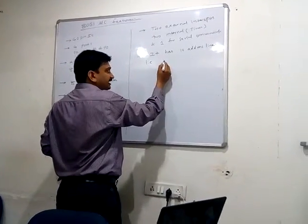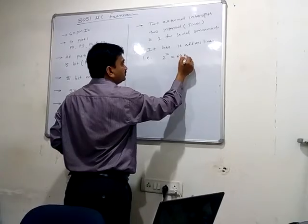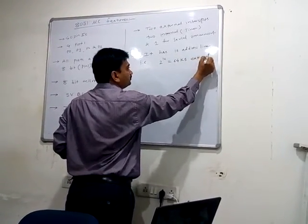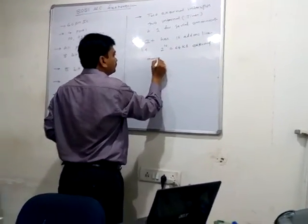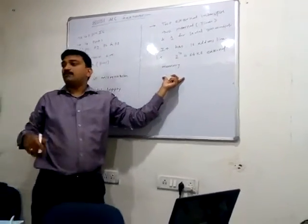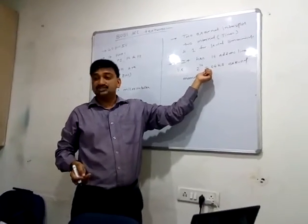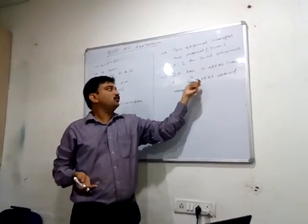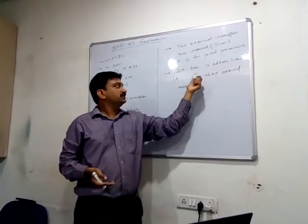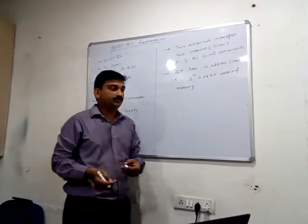The 8051 has 16 address lines, which means it can address 2 to the power of 16, that is 64KB of external memory, either RAM or ROM. With 16 address pins, it is possible to connect up to 64KB of external memory.